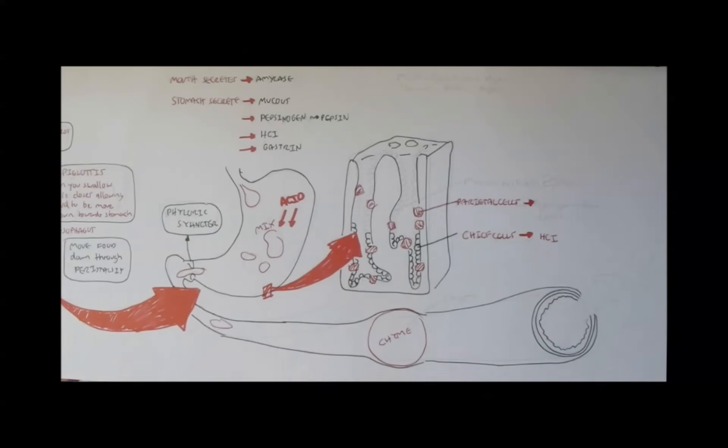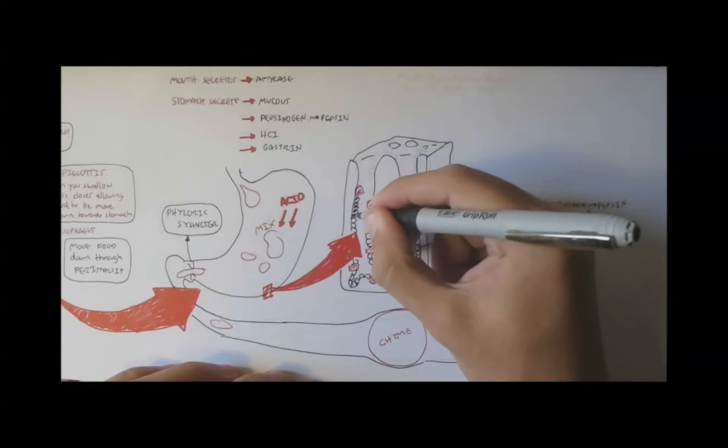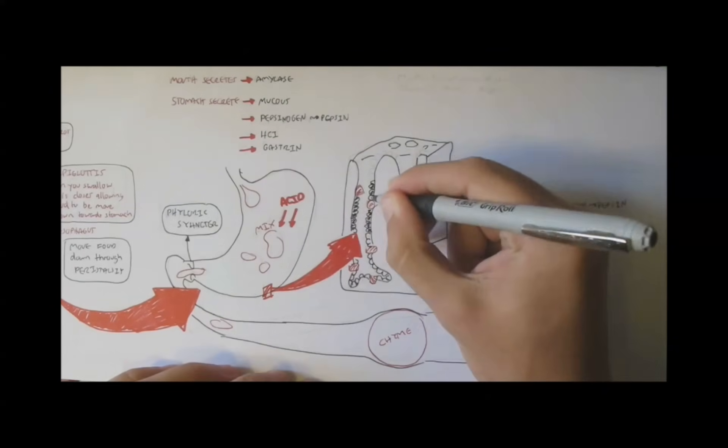The parietal cells, these red things, are situated all around the crypts and secrete pepsinogen, which will later convert to pepsin for protein digestion. So, pepsin is for protein digestion.